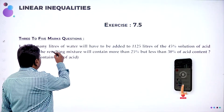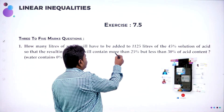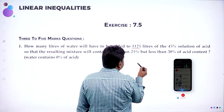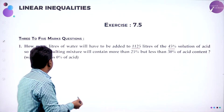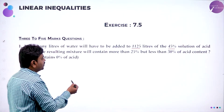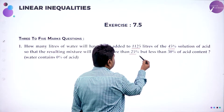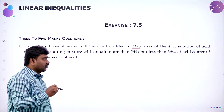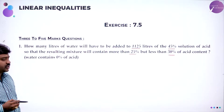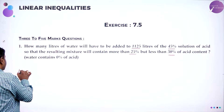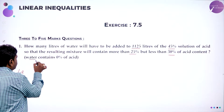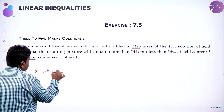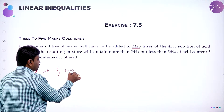So now the question is: how many liters of water will have to be added to 1125 liters of 45% solution of acid, so that the resultant mixture contains more than 25% but less than 30% of acid content? So now we have to convert it. Let us assume x liters of water is added.